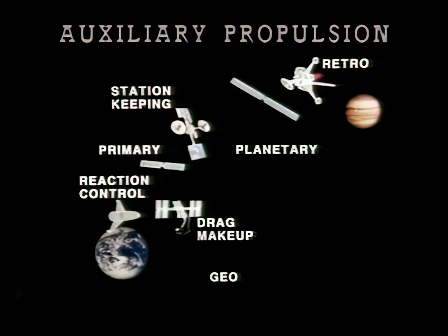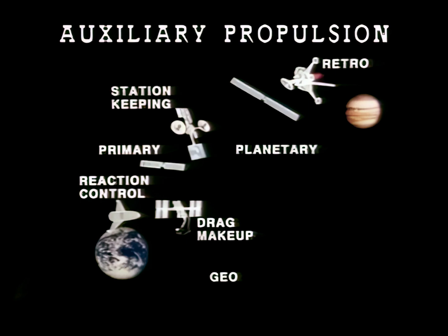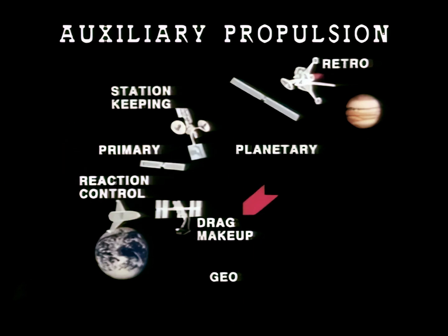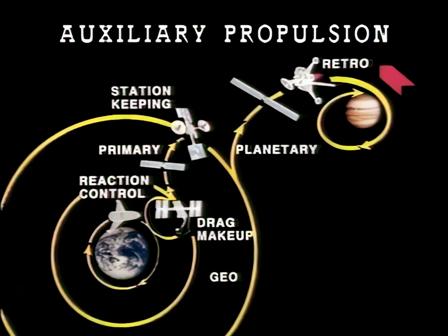Auxiliary propulsion is used for keeping space systems in desired locations or for orientation. Typical examples are the reaction control system for Earth-to-orbit vehicles, drag makeup and attitude control for low-Earth-orbit systems such as Space Station Freedom, station keeping for higher-orbit systems such as geosynchronous satellites, and retro-propulsion functions near planetary bodies.